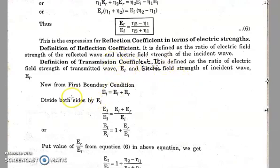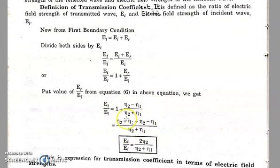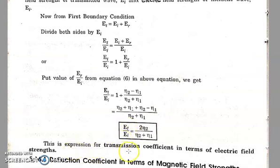Now let's do the derivation for the transmission coefficient. From the first boundary condition, ET = EI + ER. Dividing both sides by EI, ET / EI = 1 + ER / EI. Substituting the already-derived formula for ER / EI and solving, we get ET / EI = 2*eta2 / (eta2 + eta1). This is the expression for the transmission coefficient in terms of electric field strength.